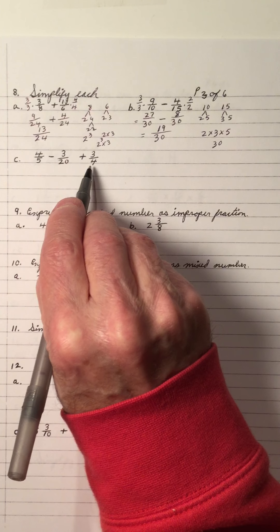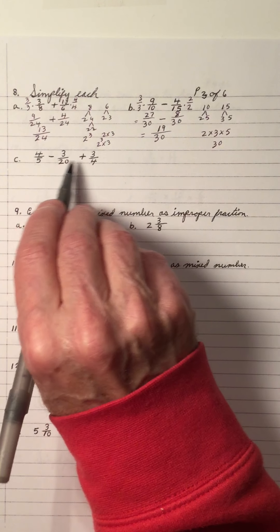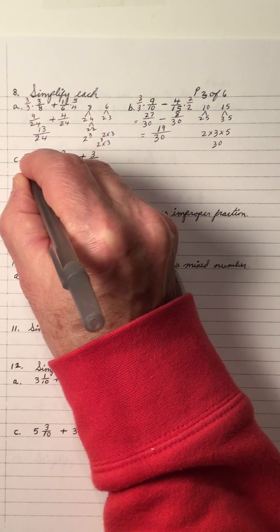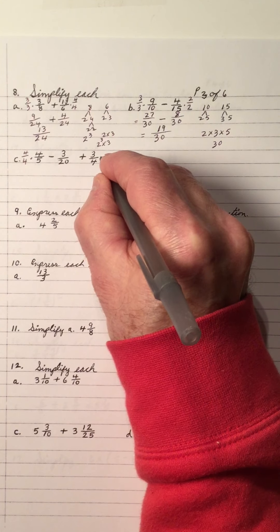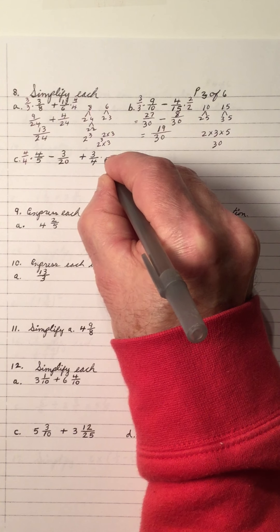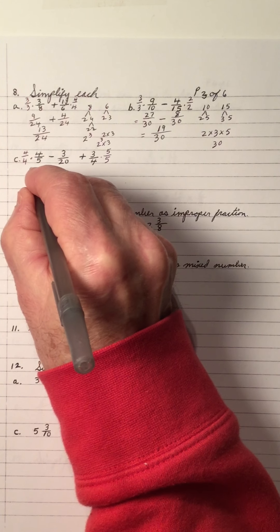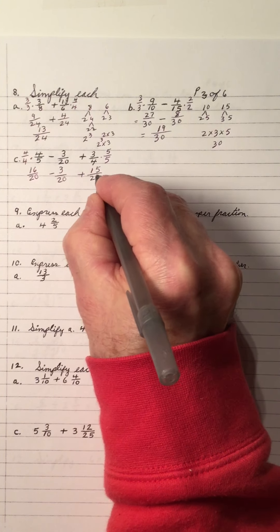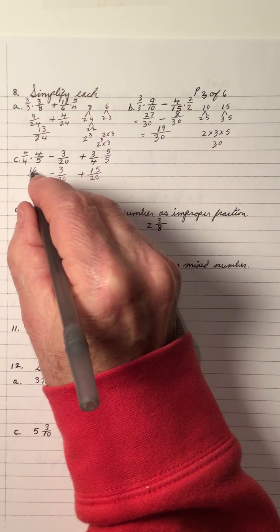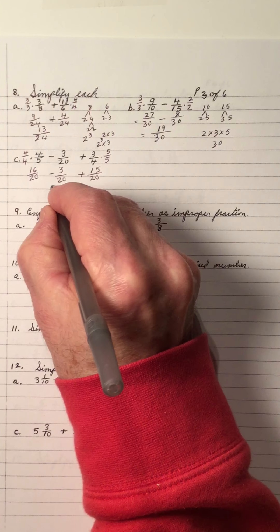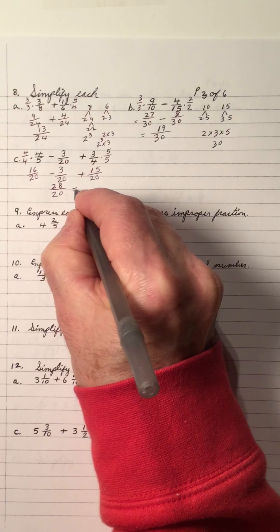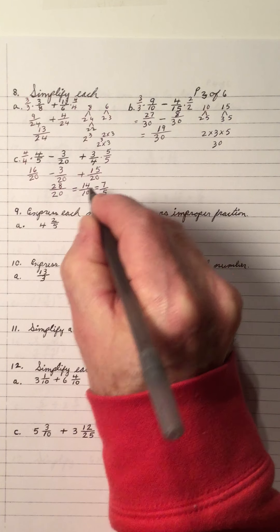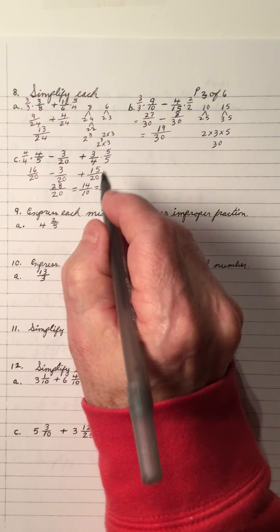Subtraction and addition with denominators 4, 20, and 5. The largest denominator is 20, and 4 and 5 are both factors of 20, so the LCD is 20. Multiply the 4 by 5 to get 20 — so put 4 on top and bottom. 20 is already LCD. 4 times 5 makes 20, so put 5 on top. That gives 16 over 20, minus 3 over 20, plus 15 over 20. 16 minus 3 is 13, plus 15 is 28 over 20. Reduce: 28 over 20 becomes 14 over 10, then 7 over 5. You could have divided by 4 right away.